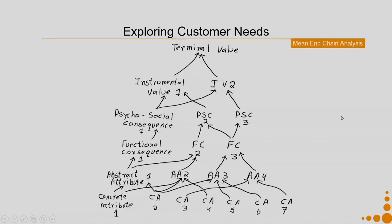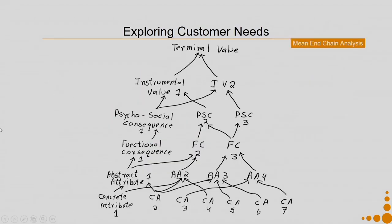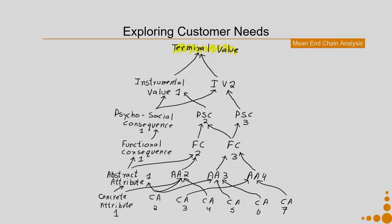The next step of exploring customer needs is the means and chain analysis — one step which takes considerable time. You have to understand the concrete attributes, abstract attributes, functional consequences, psychosocial consequences, the instrumental value, and the terminal value. In this map, the terminal value is the end goal and value you are going to deliver from your SPSS. To start this means and chain analysis, it is usually helpful to begin from the abstract attribute level.